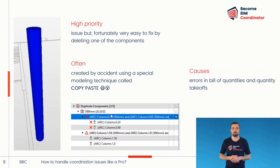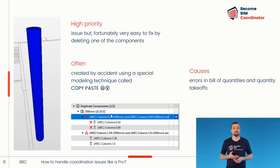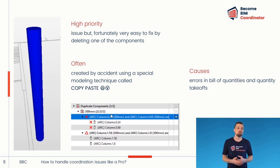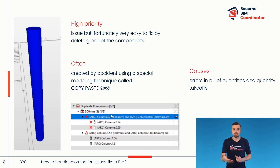First, I will discuss high priority issues. The first is where components have been duplicated. Duplicate items are quite common — this type of error occurs only in the model, since in reality no one can place two identical elements in the same location. In BIM coordination it is considered a high priority issue, but fortunately one that is easy to fix. The most common cause is a designer accidentally copying and pasting the same item twice, or two disciplines not agreeing on who is responsible for including that element. If duplicated, it causes errors in the bill of quantities. I assign this issue to the BIM leader of the responsible team and set the priority as high.